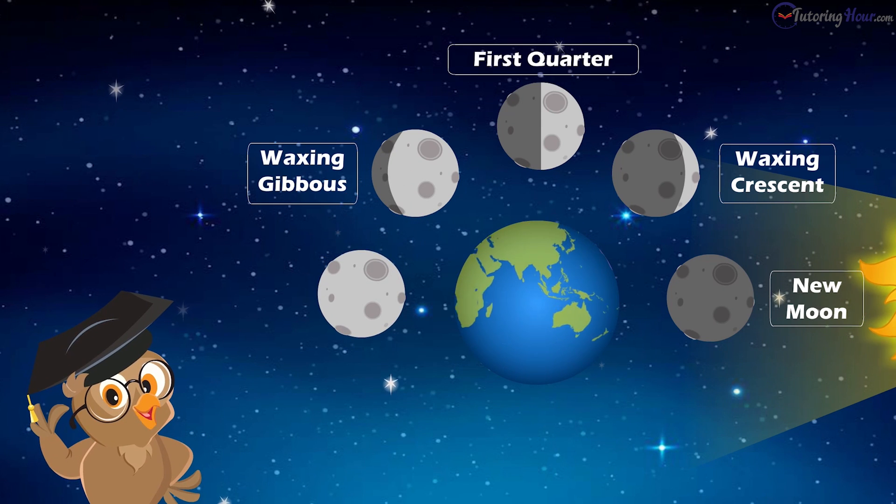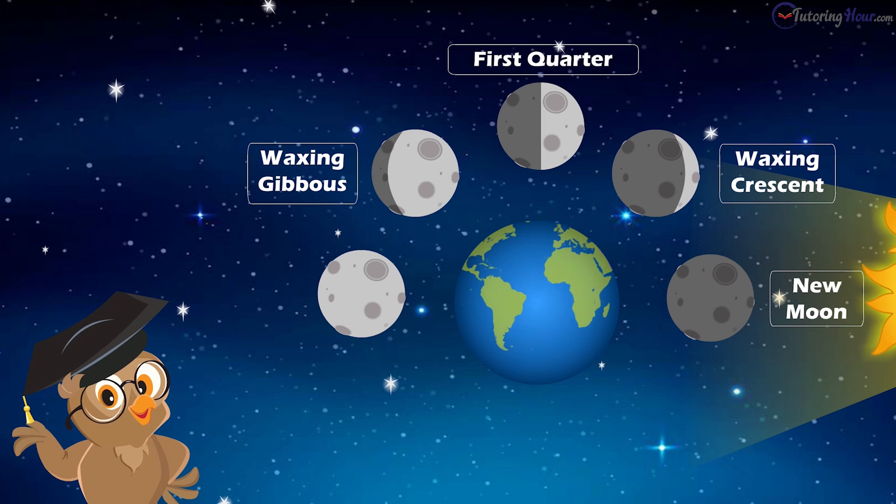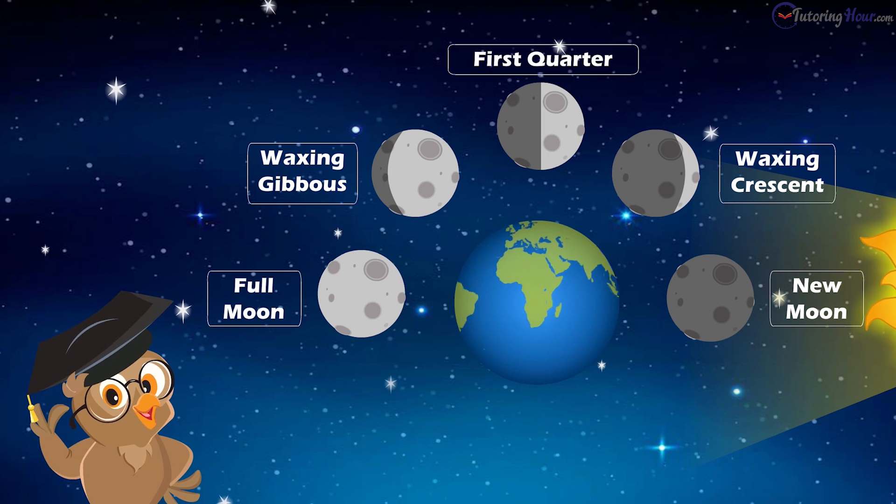The completely lit up face of the moon then turns toward the earth. This is the fifth phase, and it's the full moon. This is when we see a complete disk.